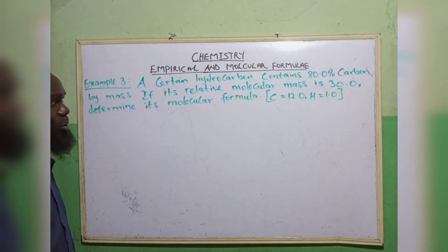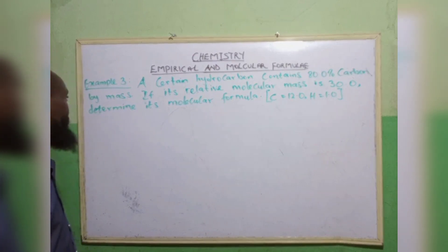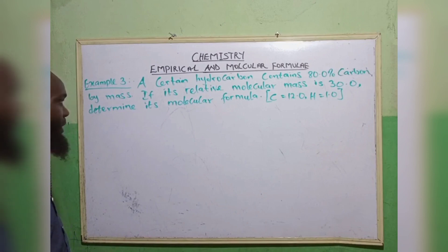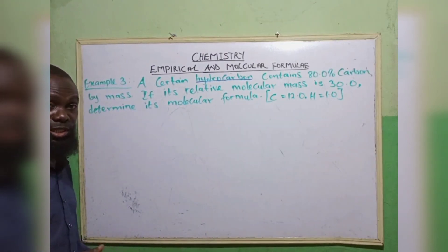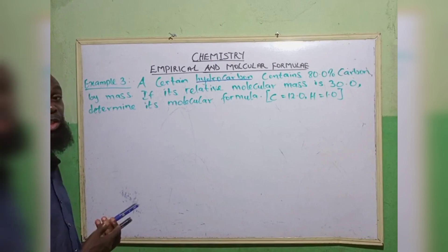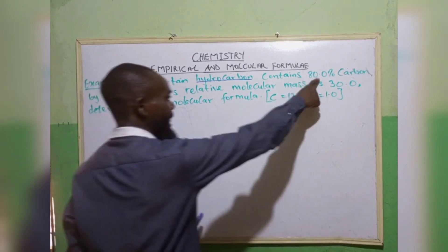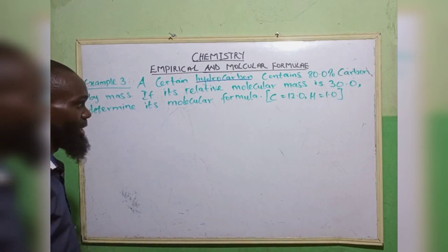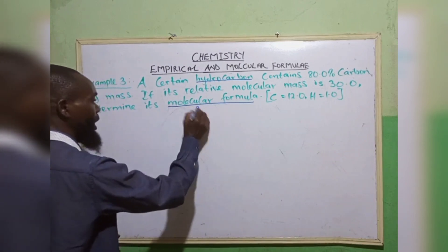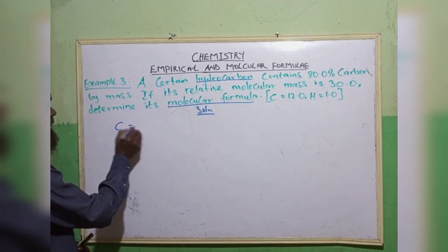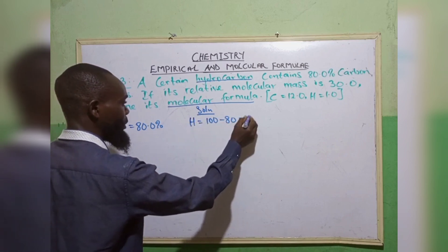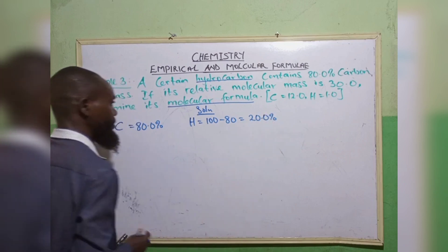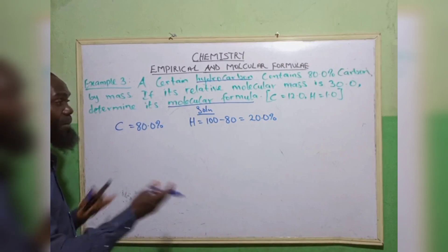Example 3: a hydrocarbon contains 80.0% carbon by mass. If its relative molecular mass is 30.0, determine its molecular formula. First, note that hydrocarbon — from organic chemistry — is a combination of hydrogen and carbon. So you are given 80% carbon, and the remaining percentage will be for hydrogen. We want to calculate the molecular formula.